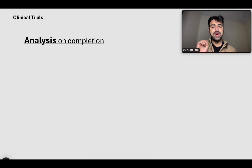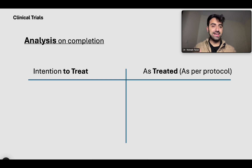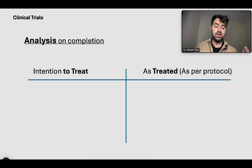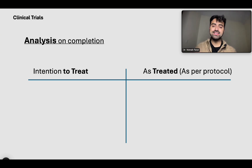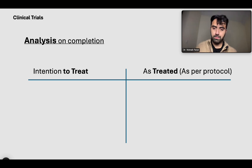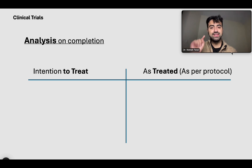Now let's talk about the different types of analysis at the completion of a clinical trial. Let's say you had 1,000 people who signed up. Half were randomized to the experimental group and half to the control group. Along the way, in a cancer drug trial, 50 people passed away, 10 did not want to continue, and 10 were lost to follow-up. How do you analyze their data? This is where these types of analyses come in.